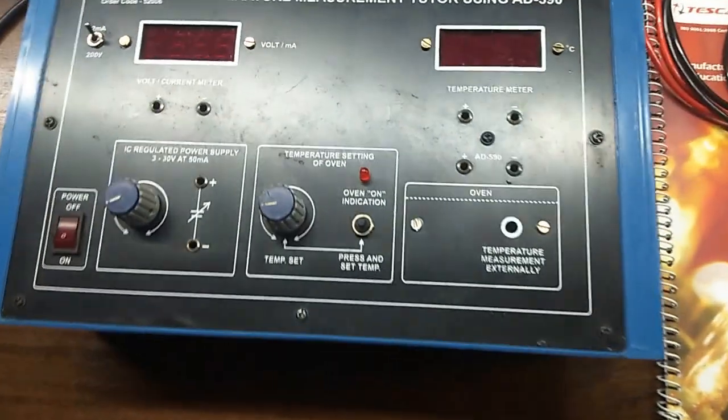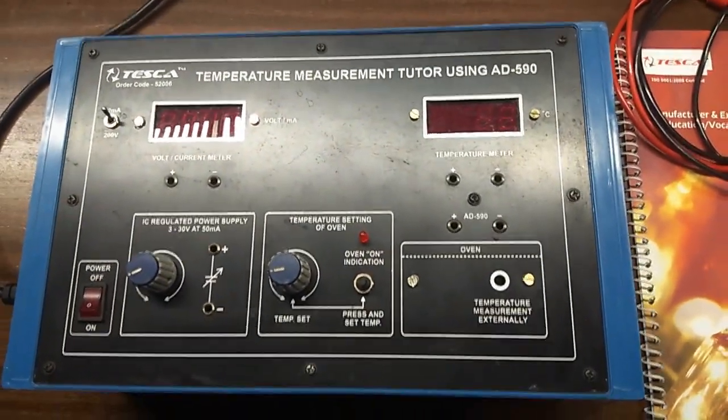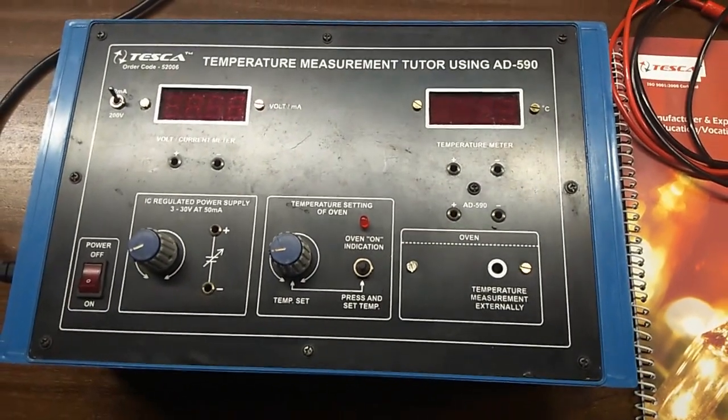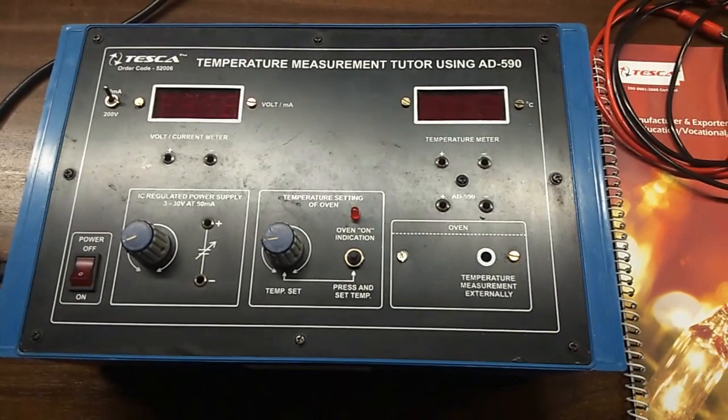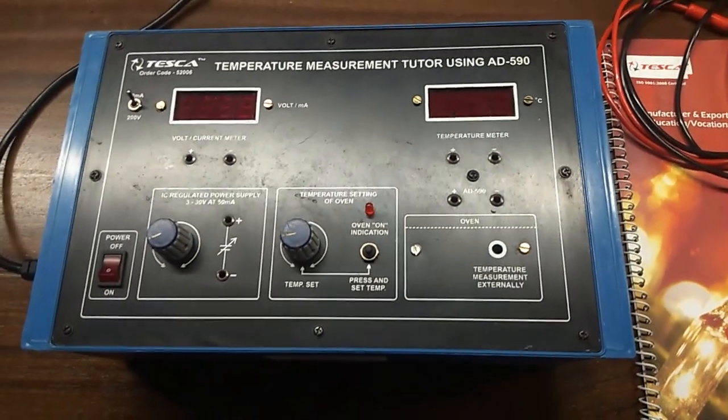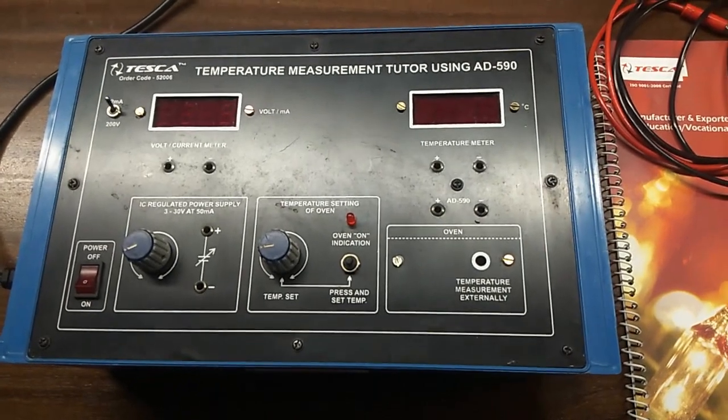Today we are going to show you our temperature measurement tutor using AD-590 trainer kit, order code 52006. This is the trainer kit where we have used AD-590, a two-terminal integrated circuit temperature transducer.